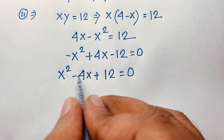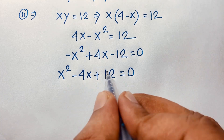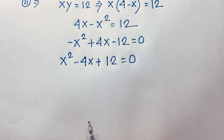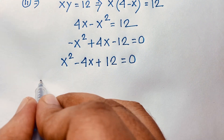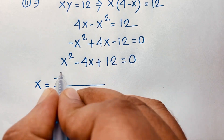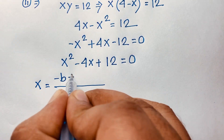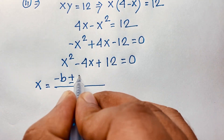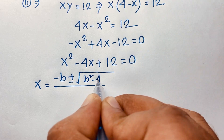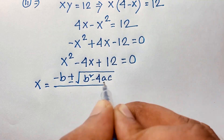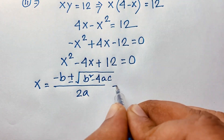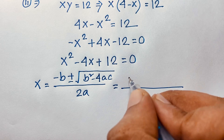We identify the coefficients: a is equal to 1, b is equal to negative 4, and c is equal to 12. Now we apply the quadratic formula: x equals negative b plus or minus square root of b squared minus 4ac, all over 2a.